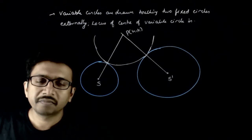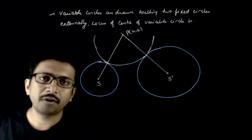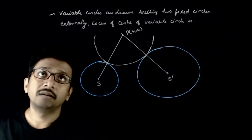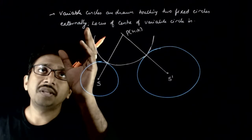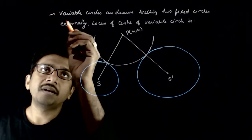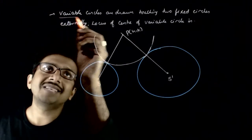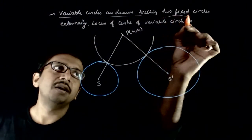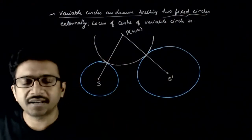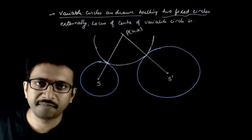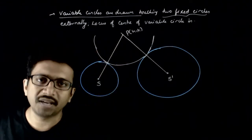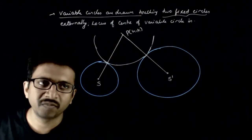Welcome students. Let us look at the following question. In this question, you are given that variable circles are drawn touching two fixed circles externally. What is the locus of the center of the variable circle?